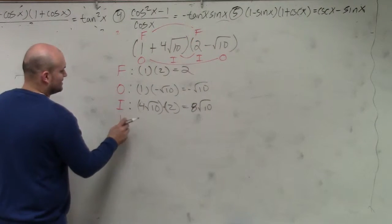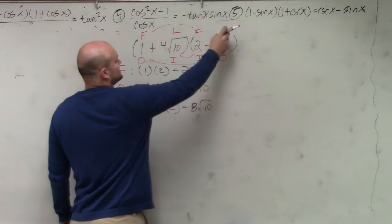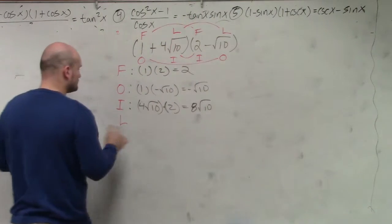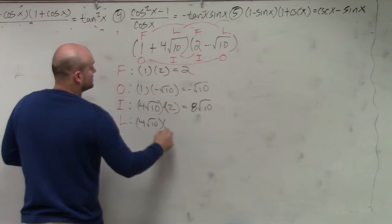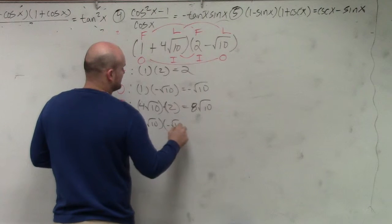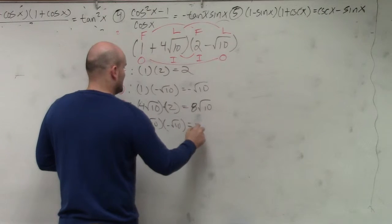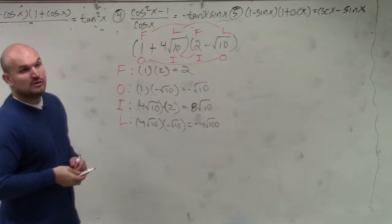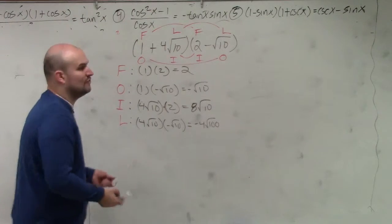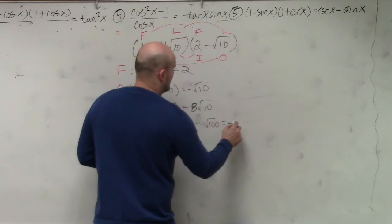And then the last one is last, which stands for the last term in each binomial. So that's going to be 4 square root of 10 times negative square root of 10. Well, that equals negative 4 square root of 100. And square root of 100 is 10. 10 times negative 4 is negative 40.